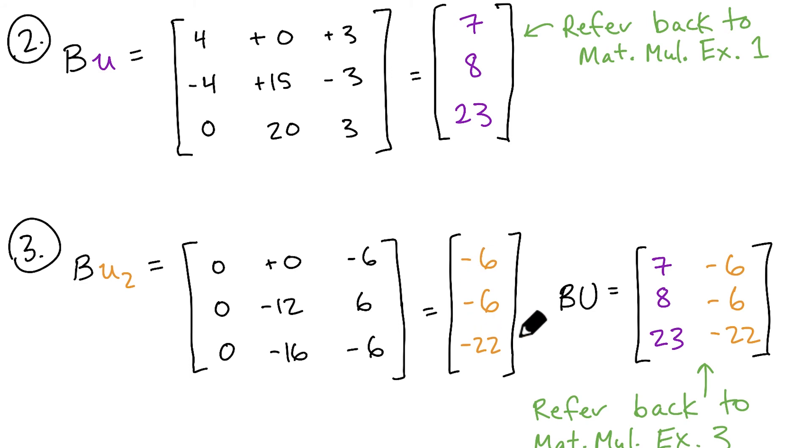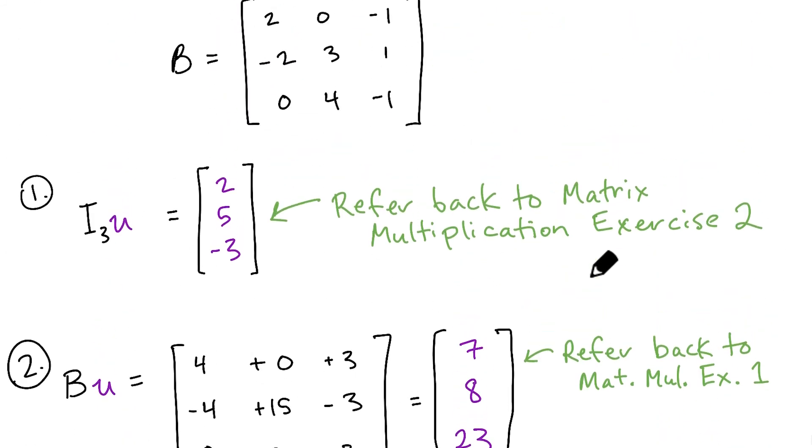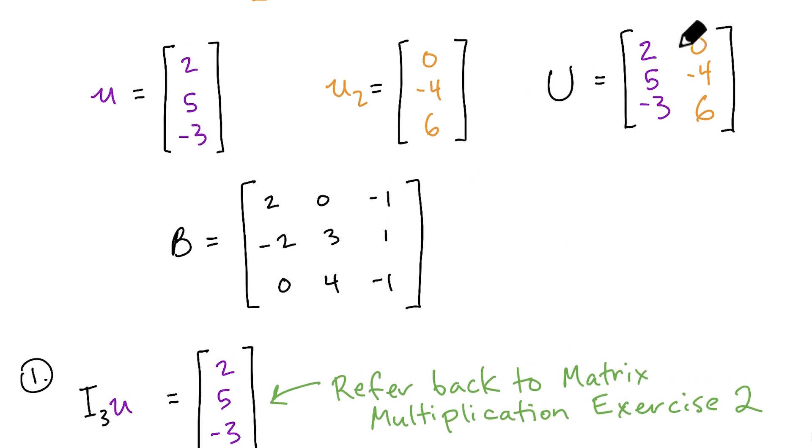And once we have this vector, that gives us our second column in the matrix that results from applying the matrix B to the matrix U.